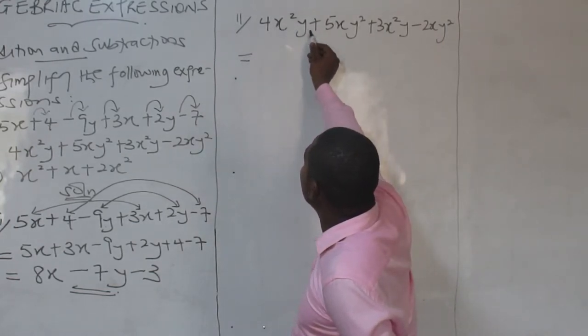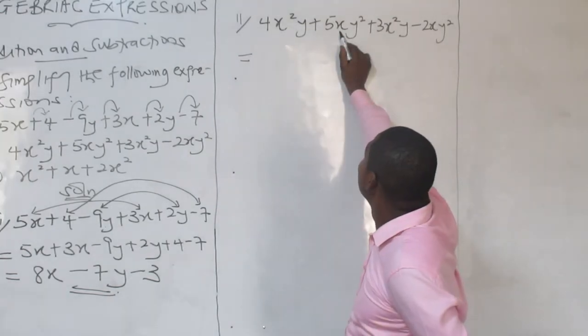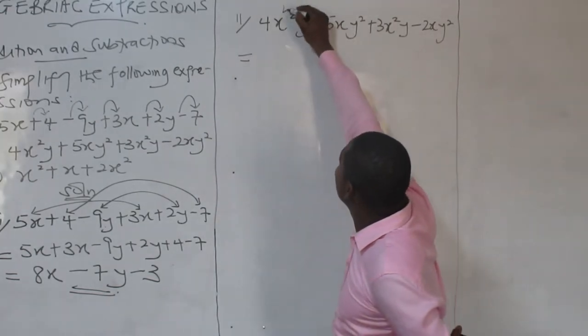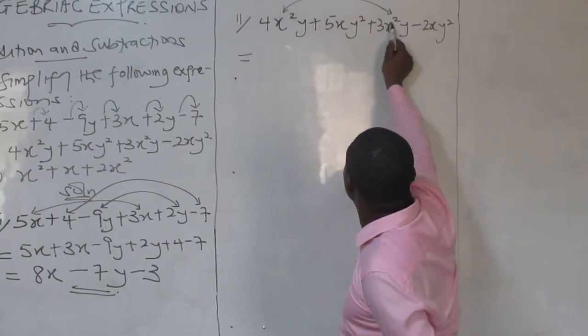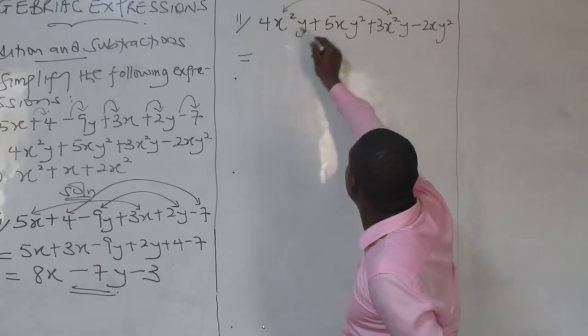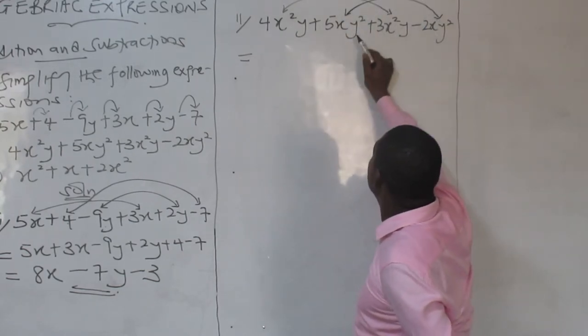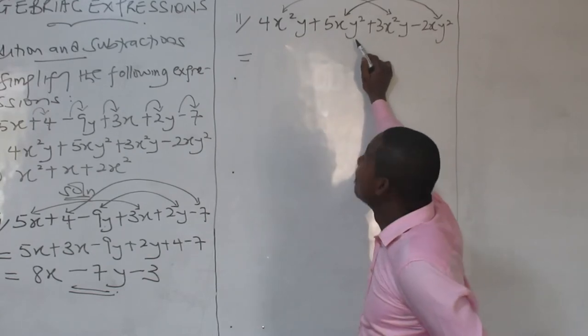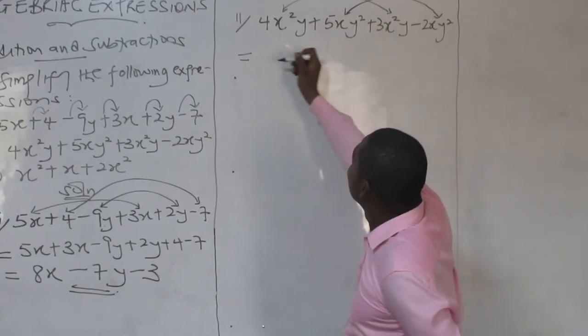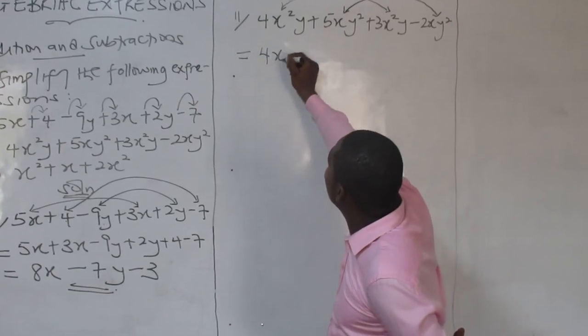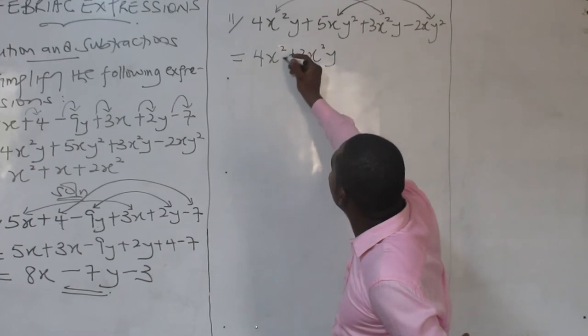4x squared y. Now, there is x with a power. There is an x lacking a power. It means the compatible groupings should be this: x with a power, y with no power. x with a power, y with no power. They're the same here. You can group them with arrows. There is also a y with a power, a y with a power. So they are similar.